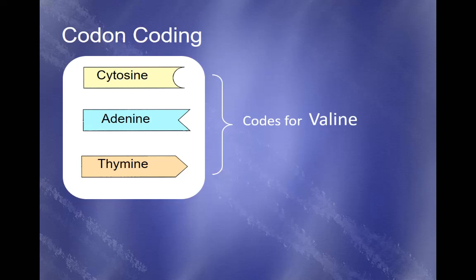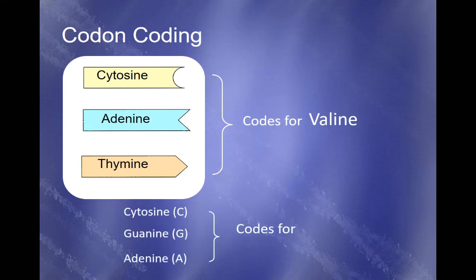Let's try another one. Cytosine C binds with G. Guanine G binds with C. And adenine A binds with uracil U. So we can use our codon wheel to predict the amino acid based on the mRNA codons.